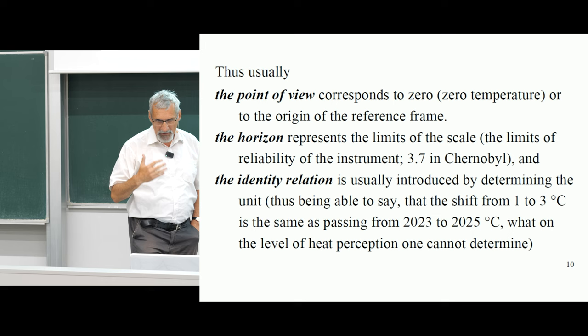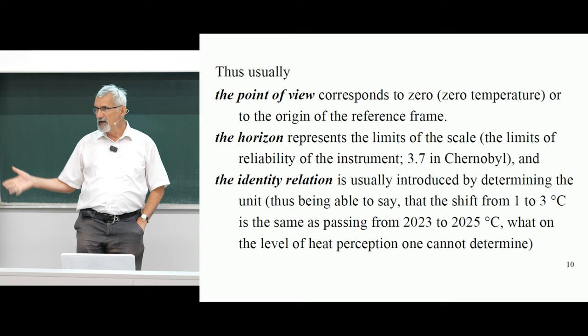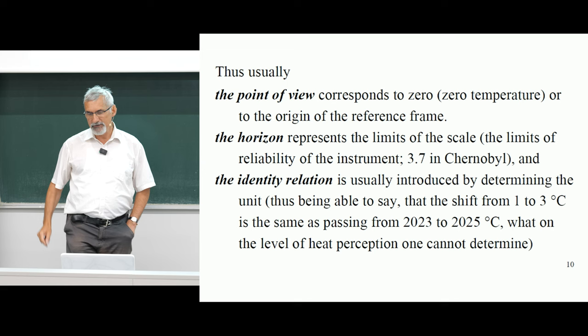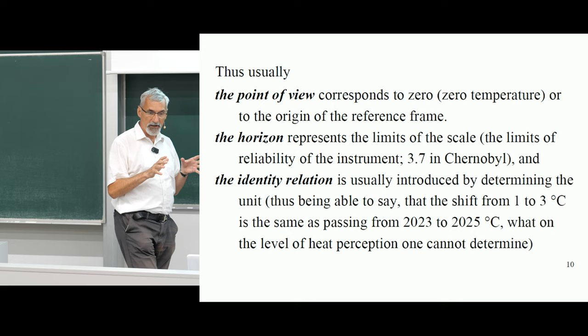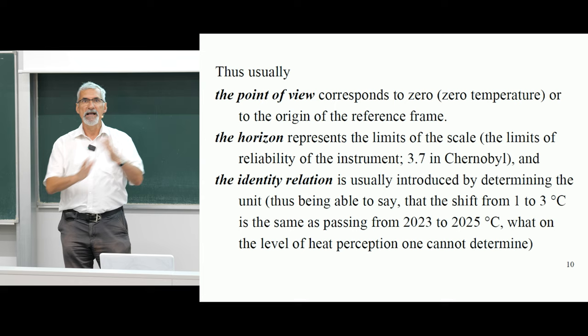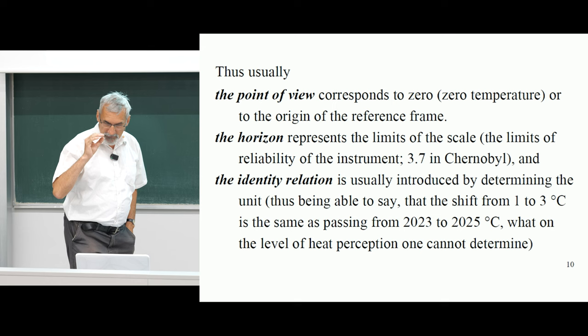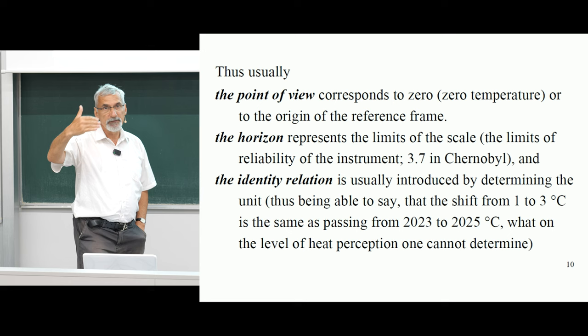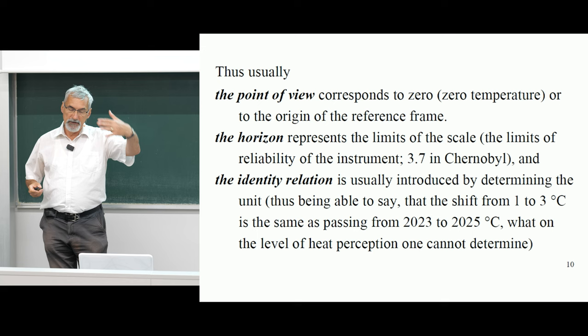The third component is the identity relation. If you have a thermometer, you can determine that the shift from one to three degrees Celsius is the same as from 2023 to 2025 degrees. Nobody is able to make this comparison in sensory perception — just by touching or feeling the temperature. But a measurement instrument gives you the identity relation: these two changes are identical. So these are the three things that a measurement instrument introduces: zero or the point of reference; a horizon — how far the scale reaches; and identity relations. These are the structures that stabilization of epistemic contact brings into our experience.